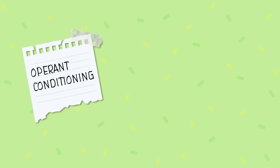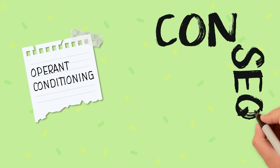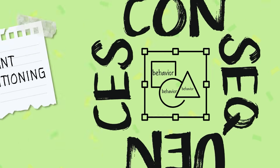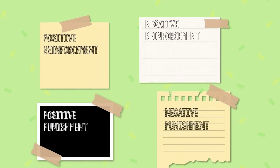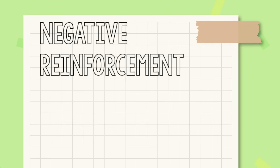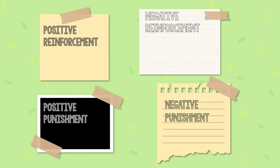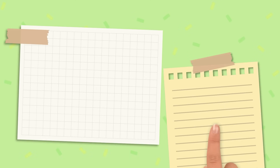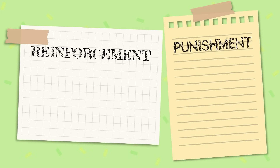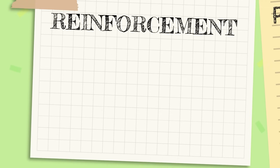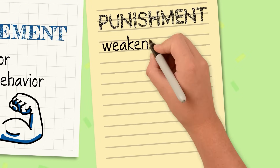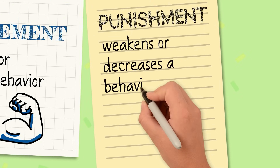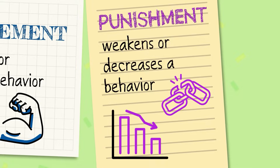Operant conditioning is all about how consequences shape behaviors. Every consequence you experience can be sorted into one of four types. To master these concepts, it helps to pull them apart. First, let's break down reinforcement and punishment. If a consequence strengthens or increases a behavior, that's reinforcement. If it weakens or decreases the behavior, that's punishment.